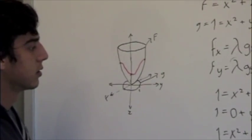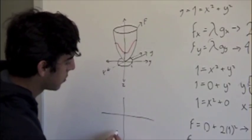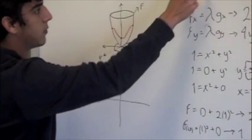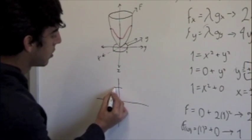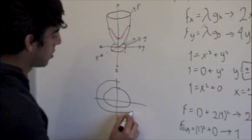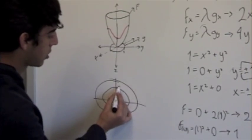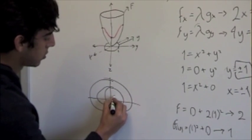We can also take a look at our level curves. If we graph the level curves of f, we're going to get... And for our g, we just get a circle.